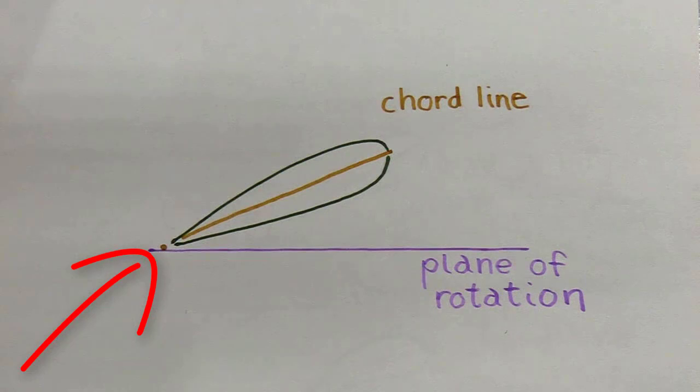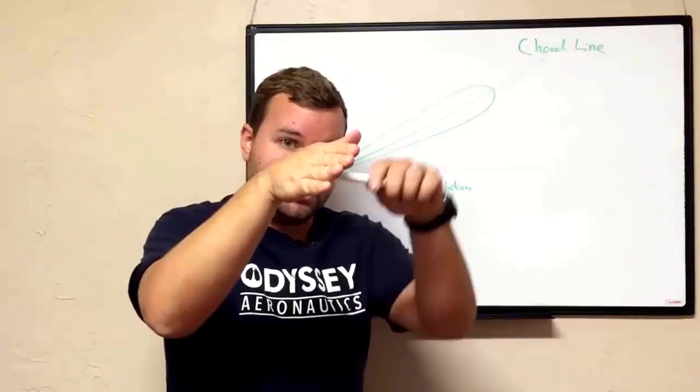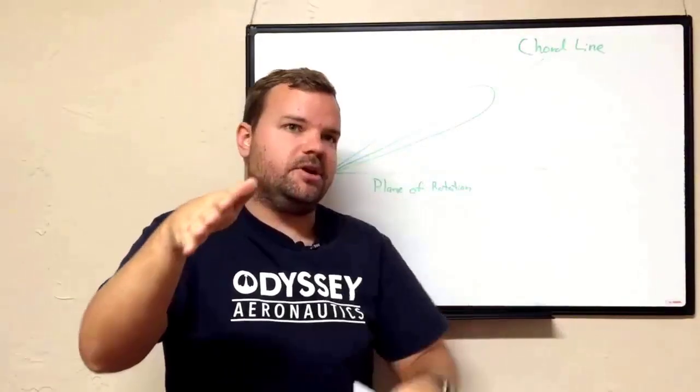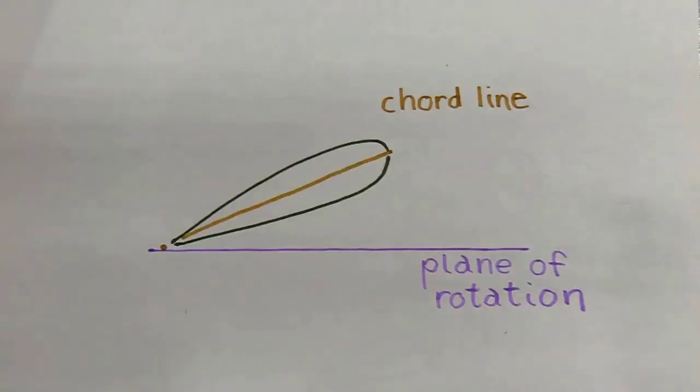Now just because a rotor blade is moving through the air like this doesn't mean that that is necessarily the angle the wind is striking it at. Depending on if you're climbing, descending, in an autorotation, or whatnot, the wind might be striking it at different angles.